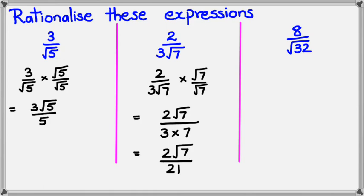And once again, there are no square root symbols in the denominator. Now having a look at the final example here, 8 divided by square root of 32, I can simplify square root of 32, so I might actually do that first.